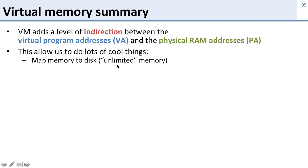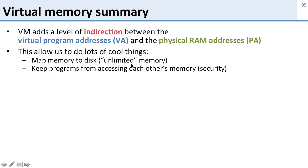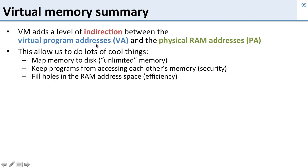We can map memory to disk, giving us sort of unlimited memory. We can keep programs from accessing each other's memory, which gives us security and reliability, because each program has its own virtual addresses — its own 32-bit address space. We can also fill holes in the memory address space, giving us efficiency. Because of the mapping between program addresses and physical addresses, even if we have holes in physical memory, we can just map more programs into it without any problems.